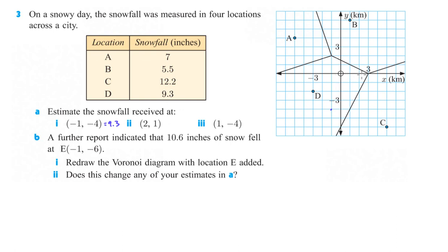Anyway, (2, 1). 1, 2, and 1 is going to be closest to B. So that's going to be about 5.5.